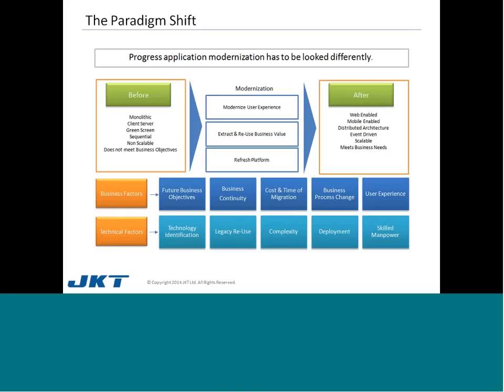Once you embark on the modernization journey, what should you look for after modernization? You should look for an application that is web-enabled so users can access it from anywhere, and mobile-enabled so pieces of your application can be accessed through mobile as well. It should have a distributed architecture that allows load balancing and makes your application scalable. It should be event-driven, meaning if you want to change a customer limit, you just click on the customer limit tab and immediately make the change. The new open architecture will allow you to publish web services to address new business needs.